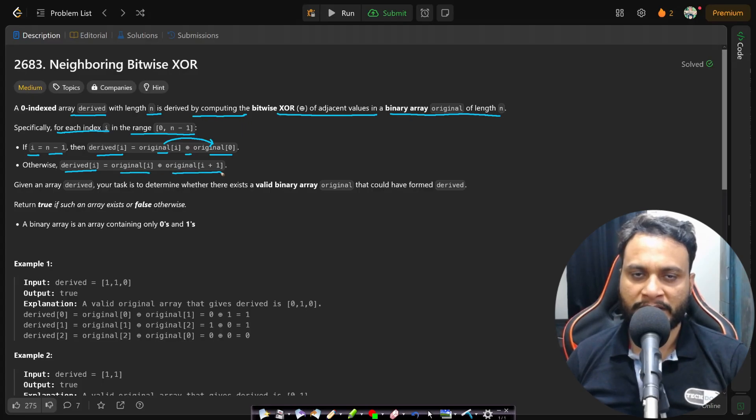That means you can consider the array to be cyclic. Given an array derived, your task is to determine whether there exists a valid binary array original that could have formed derived. Return true if such an array exists, or false otherwise.